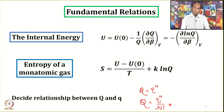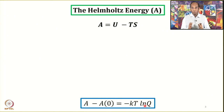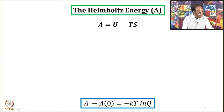Keeping this in mind, let us move forward in deriving the relationships between partition function and pressure. The equation we will derive is A - A₀ = -kT ln Q. Here A is called Helmholtz energy or Helmholtz function, also sometimes called Helmholtz free energy. The definition is A = U - TS.